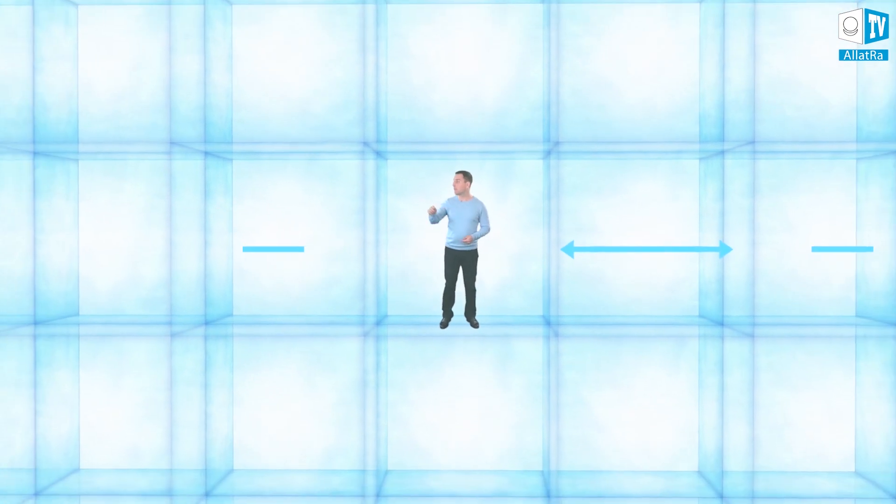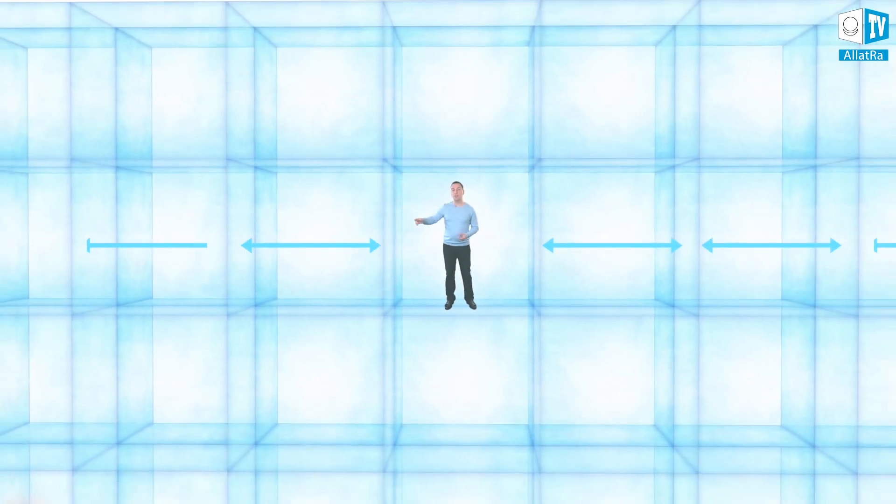Between the nearby Isoosmic membranes located on one straight line, the absolute distance and size is always observed.